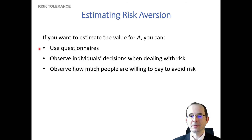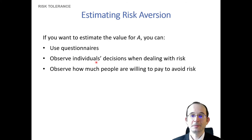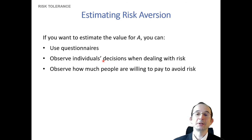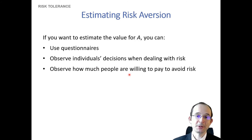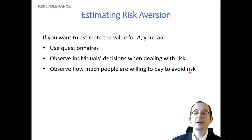We can get estimates for risk aversion through the use of questionnaires, which is something often done in investment advising. We can also observe how individuals conduct certain risky interactions — like gambling — or how they actually invest. Finally, we can back out a coefficient of risk aversion from the risk premium: the idea that an individual's risk aversion introduces a certainty equivalent, which lets us back out a risk premium, and that can tell us what the implicit coefficient of risk aversion is.